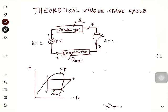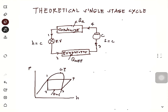As we compress it, since our compressor only handles vapor, the quality is equal to one, or 100% vapor. As we compress the refrigerant, the temperature will increase. At point four, this is the maximum temperature for our cycle. That is the P-H diagram.